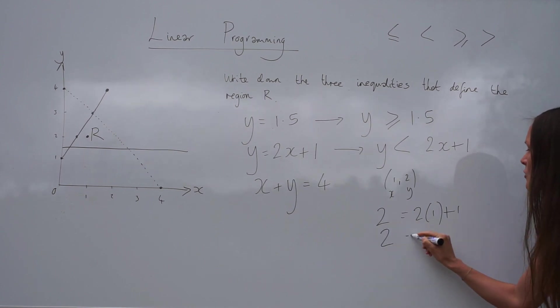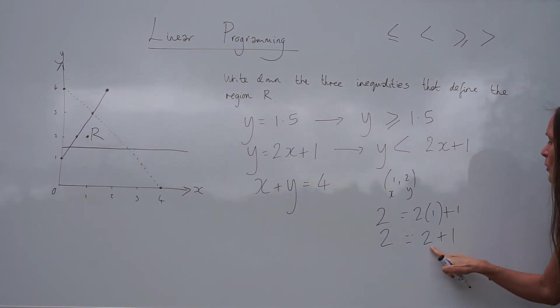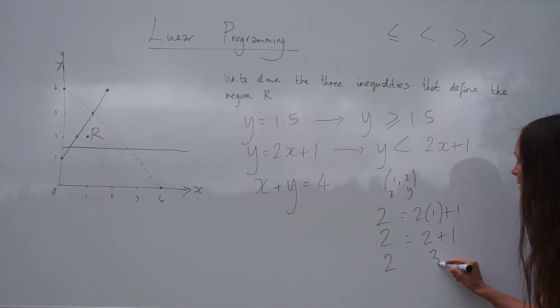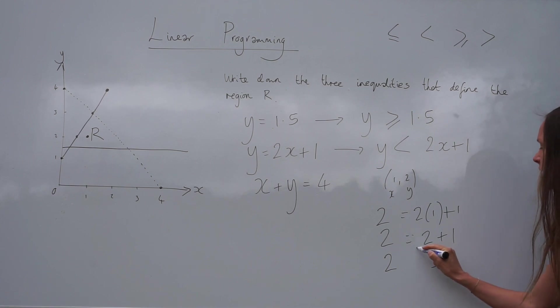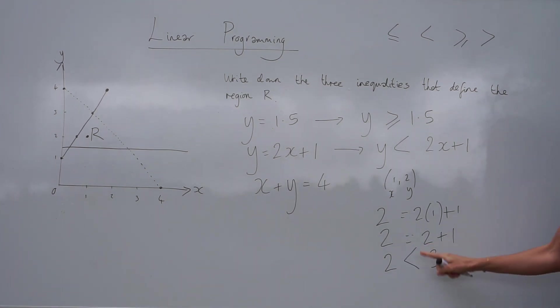Now work that out. 2 times 1 is 2. And then if you add 2 and 1 together, you get 3. Well, 3 is greater than 2. So the inequality sign would look like this. Remember, the inequality sign opens at the greater sign. So 3 is greater than 2. So that's why the inequality sign is this way.